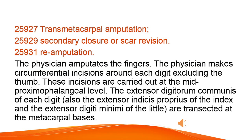Transmetacarpal amputation — secondary closure or scar revision, re-amputation. The physician amputates the fingers, making circumferential incisions around each digit excluding the thumb. These incisions are carried out at the mid-proximal phalangeal level. The extensor digitorum communis of each digit, the extensor indicis proprius of the index, and the extensor digiti minimi of the little finger are transected at the metacarpal bases.